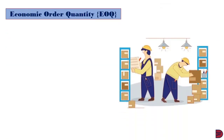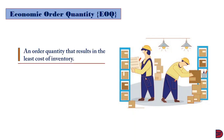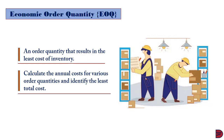We move on to economic order quantity. As stated earlier, an entity has many options to order its inventory. However, there is a quantity that minimizes the total cost of the inventory. Economic order quantity is that quantity that must be ordered to incur the least total inventory cost. One approach to finding economic order quantity is to calculate the total cost for various order quantities and identify the one providing the least cost.